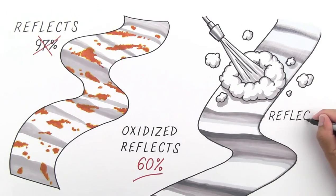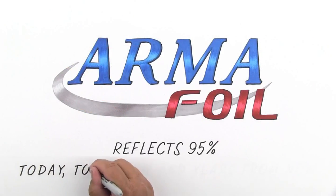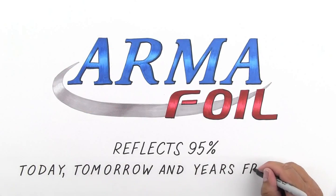This means Arma foil will reflect 95% of the radiant heat today, tomorrow and years from now.